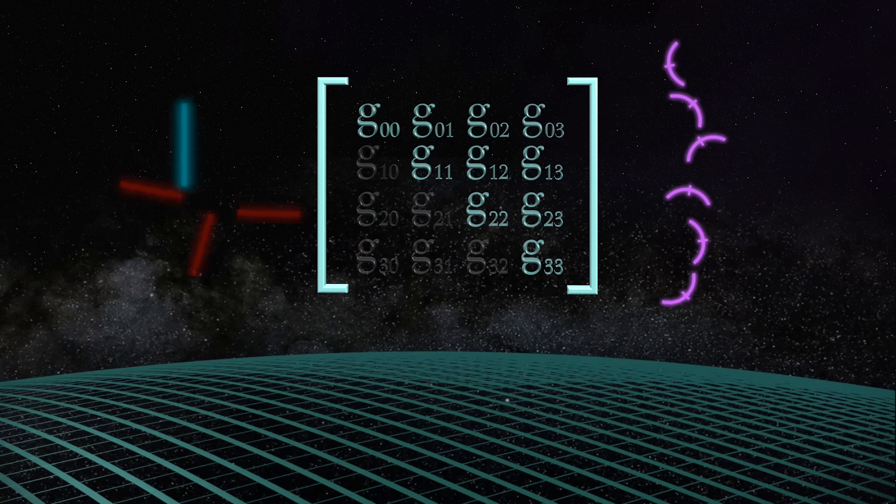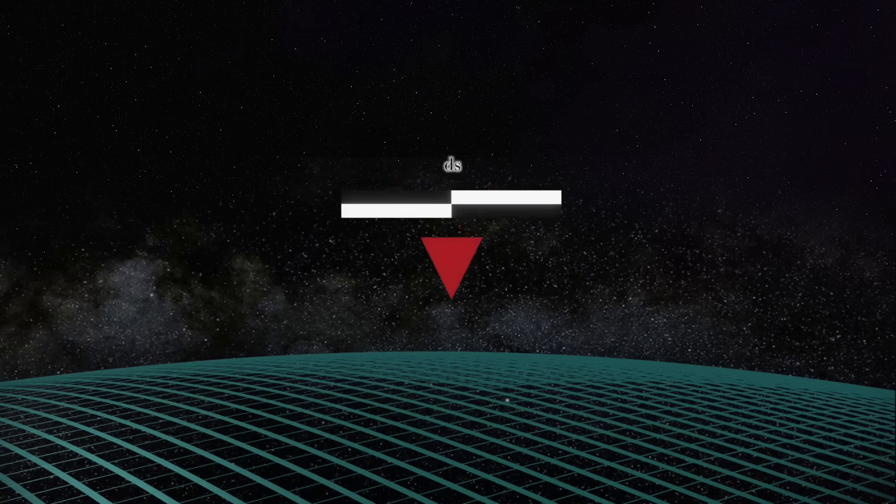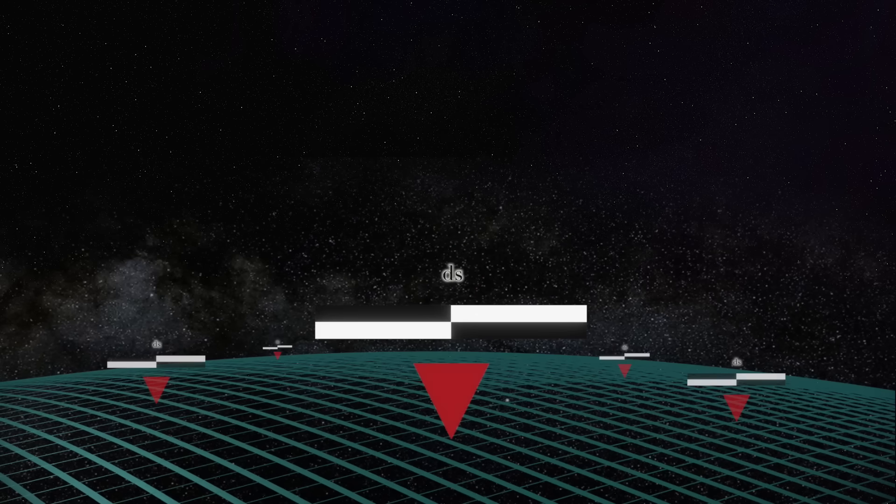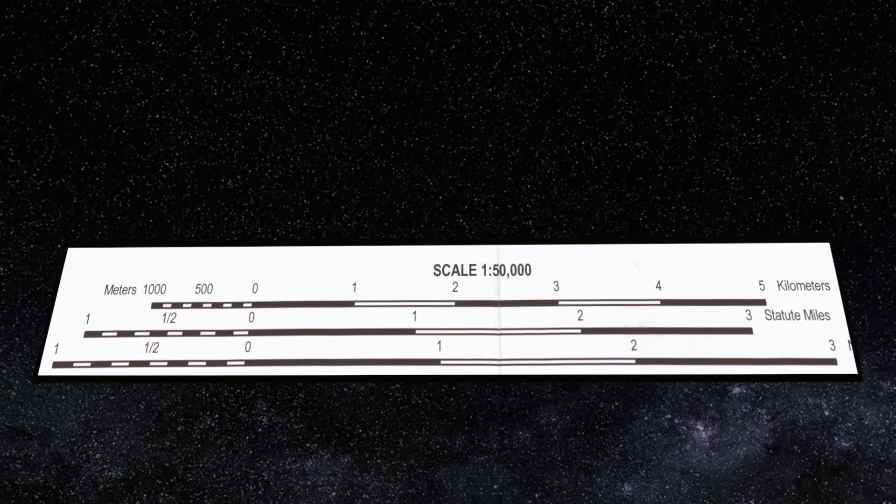Together, these numbers give us that final desired value, the value of the bar scale we need for each patch of our map. And, as we stated at the beginning of our video, that's all the metric tensor really is, just a fancy bar scale.